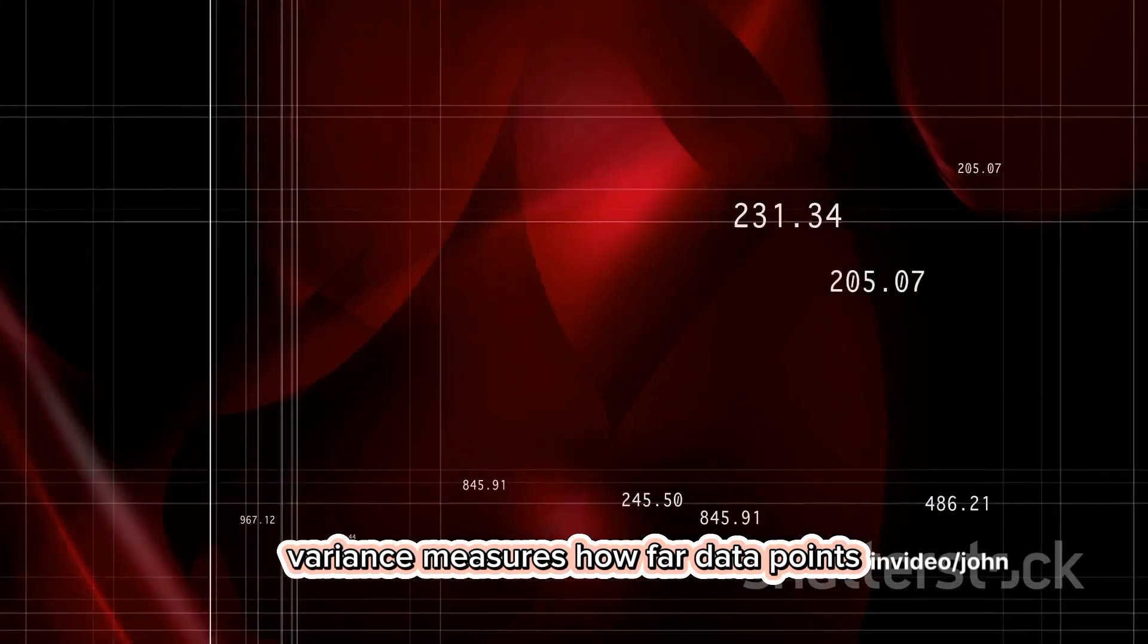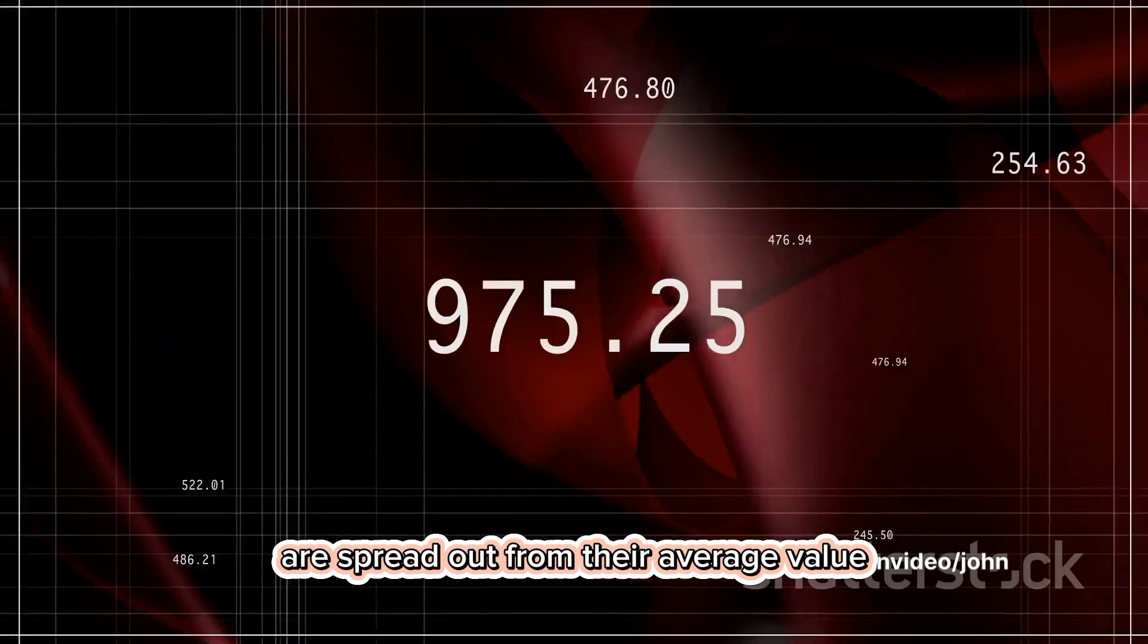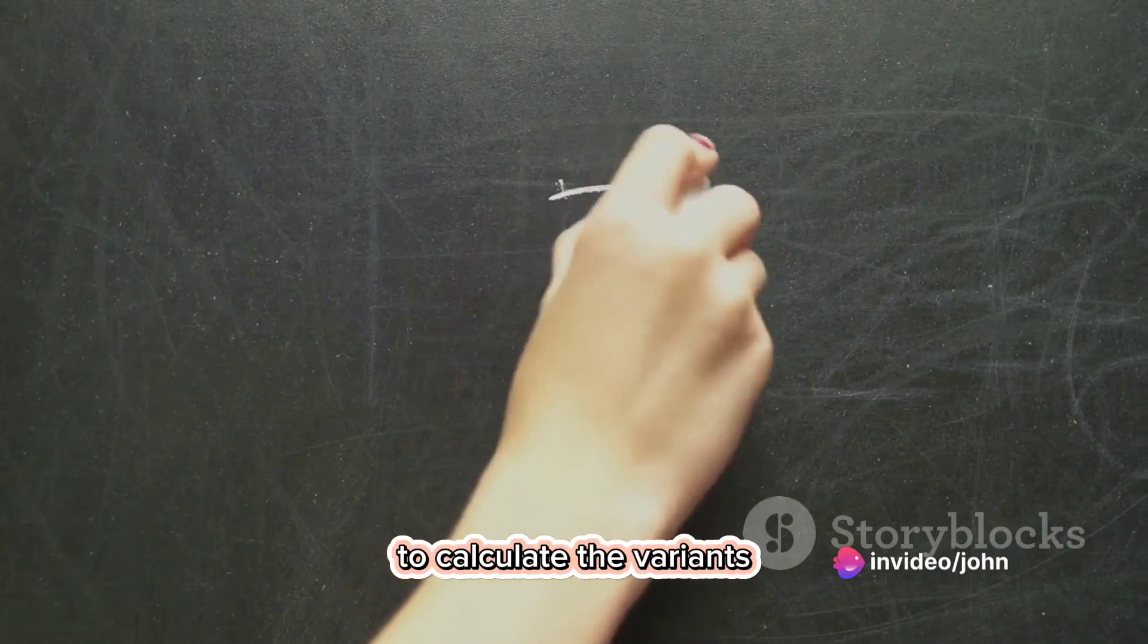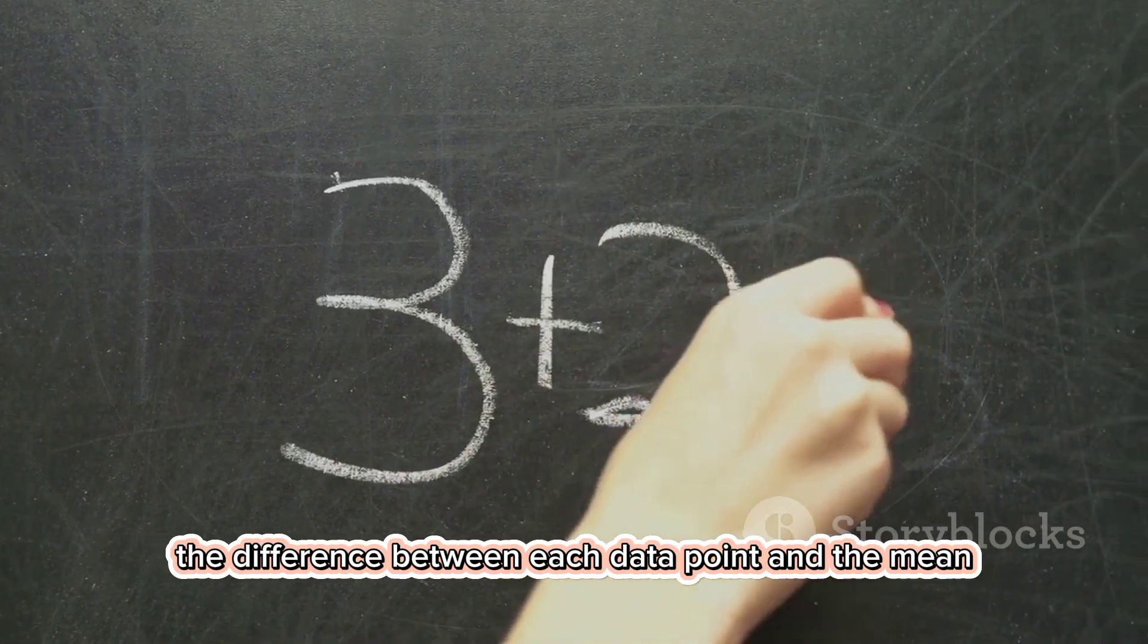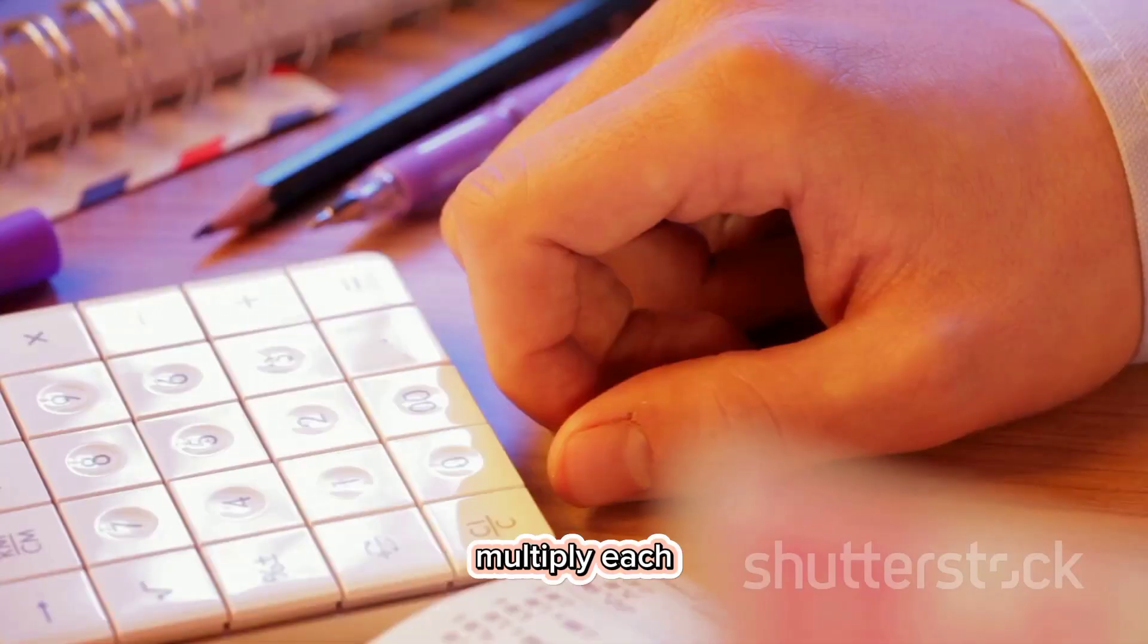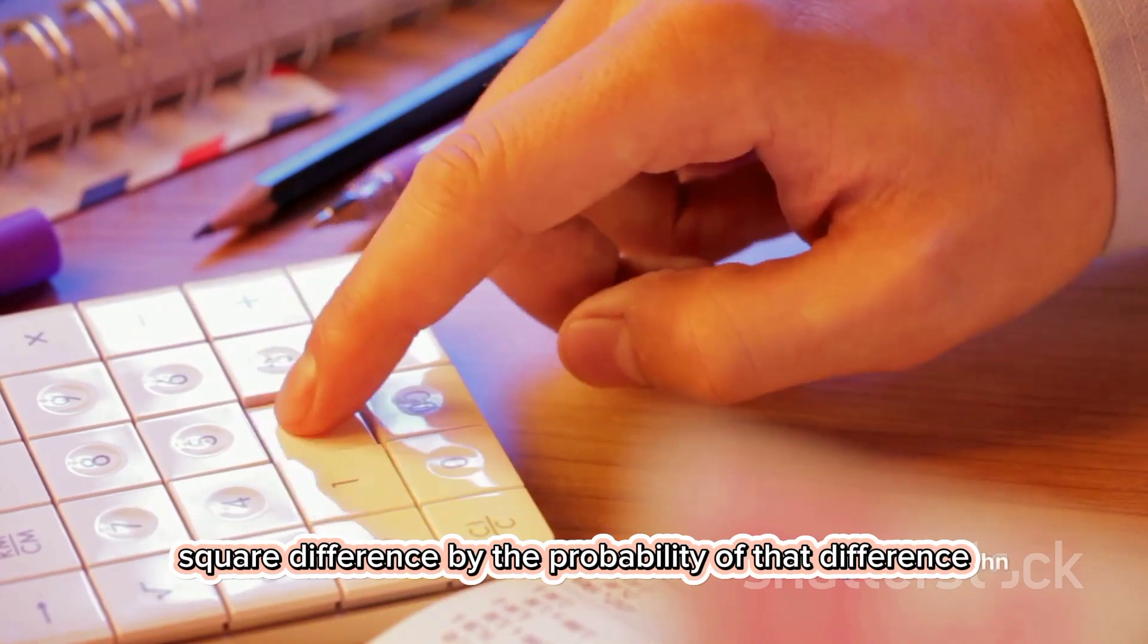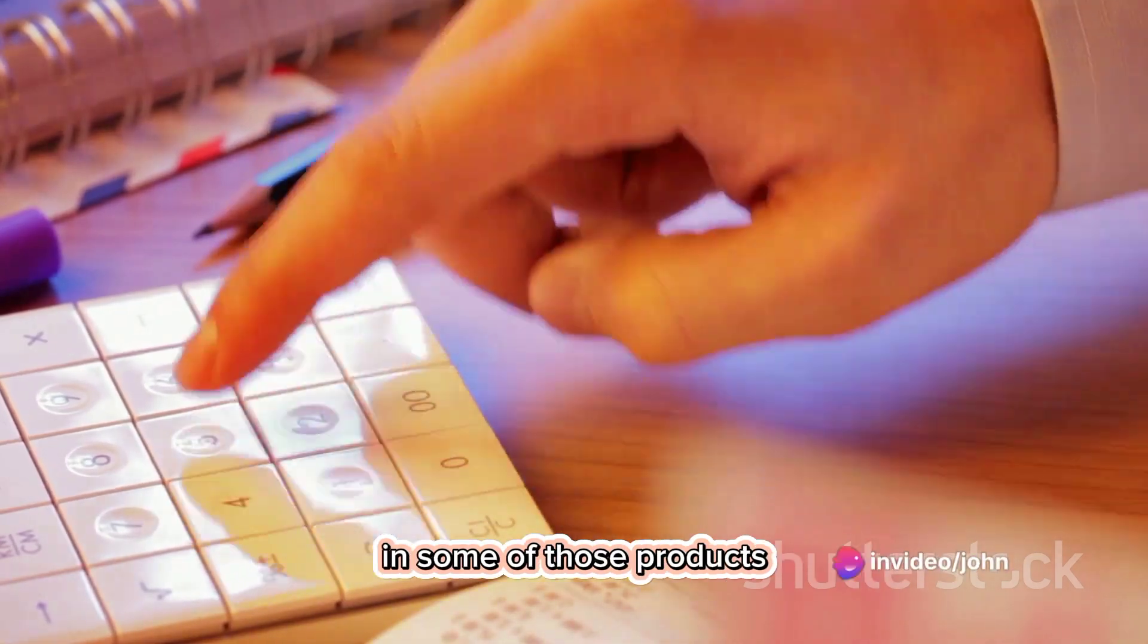Variance measures how far data points are spread out from their average value. To calculate the variance, we first need to find the difference between each data point and the mean, then square it. Multiply each squared difference by the probability of that difference, and sum those products. This gives us the variance.